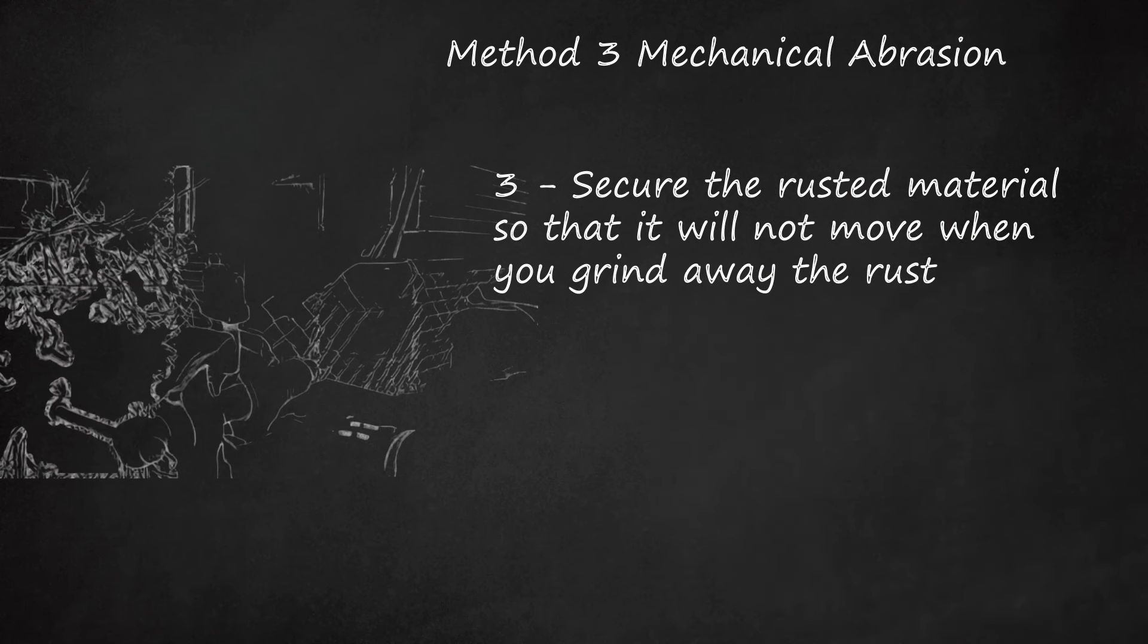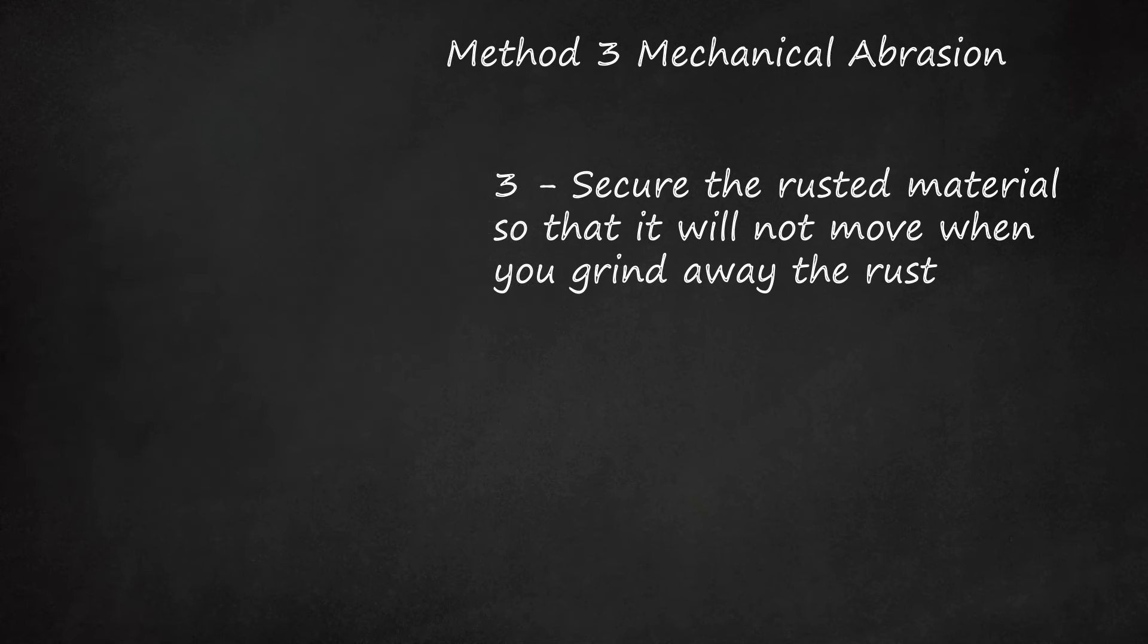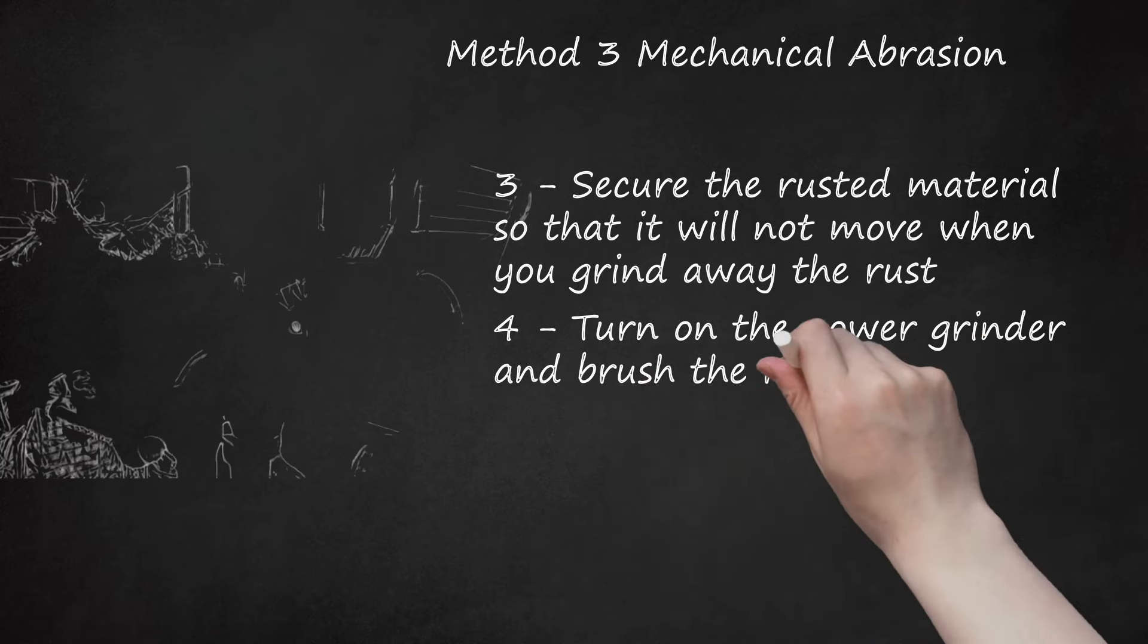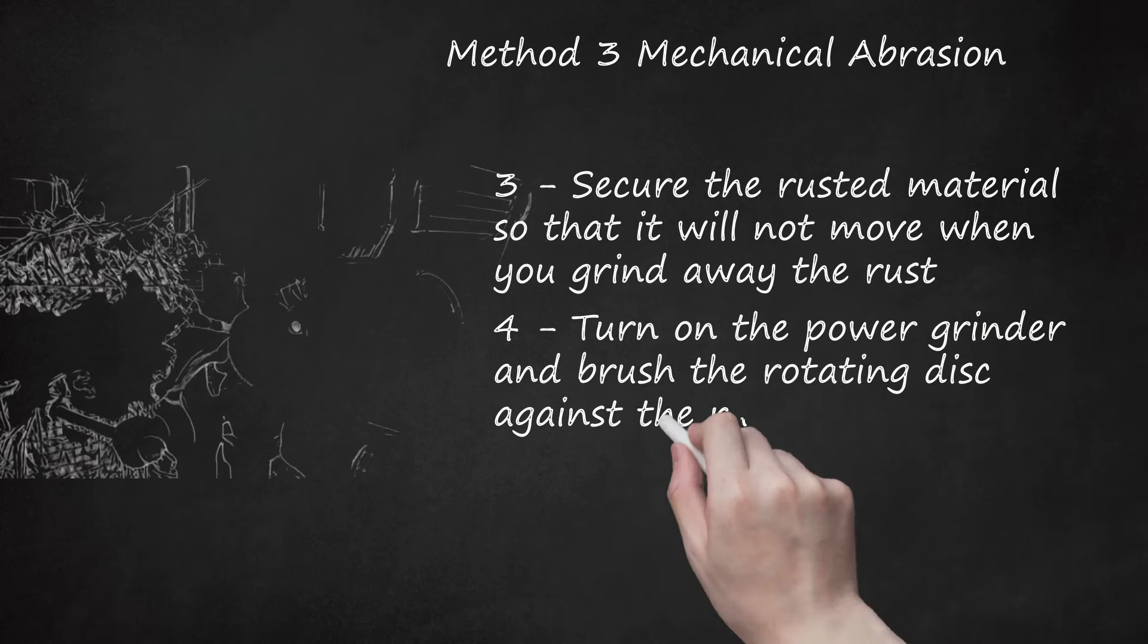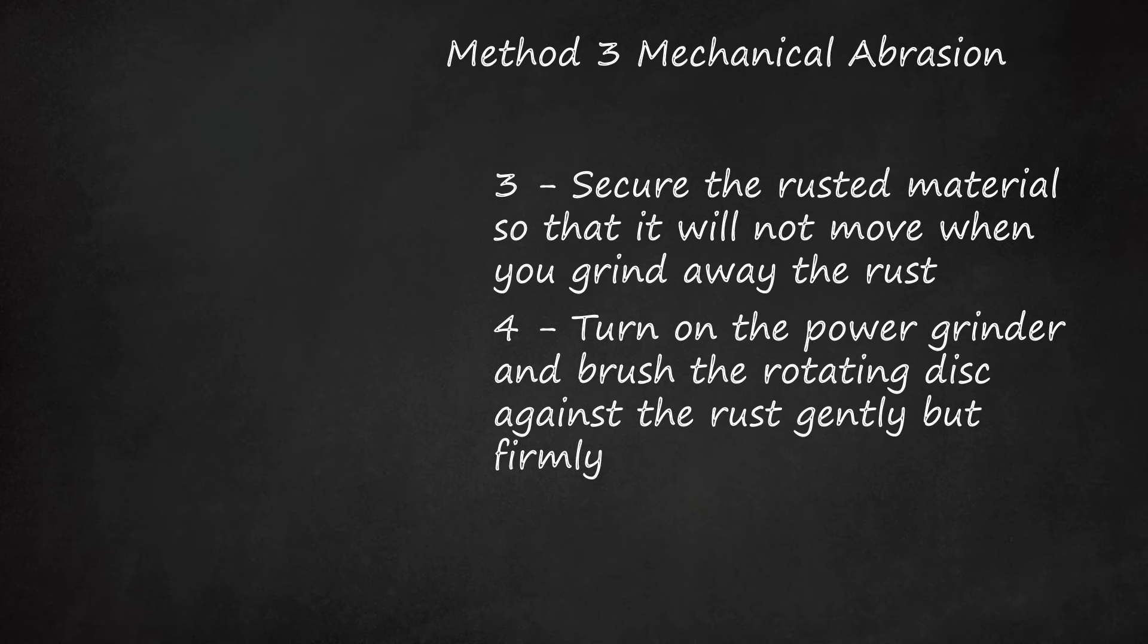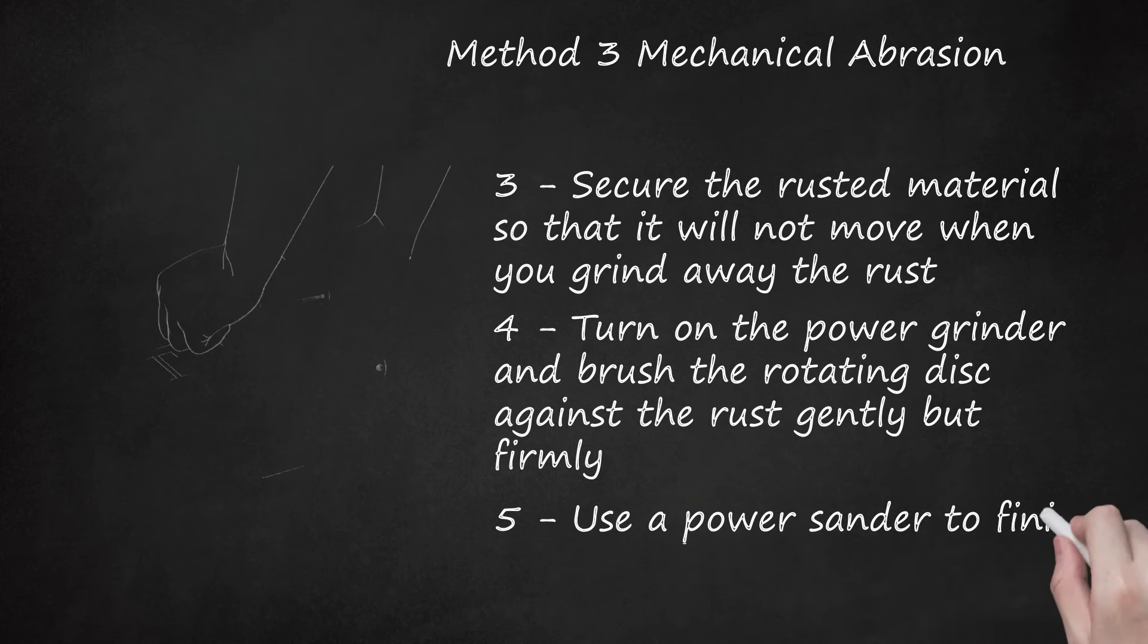Third, secure the rusted material so that it will not move when you grind away the rust. Clamp it down with a vise, if possible, or make sure that it's heavy enough to stand still while you sand away. Fourth, turn on the power grinder and brush the rotating disc against the rust gently but firmly. Be sure to keep it in constant motion to avoid accidentally gouging the metal.